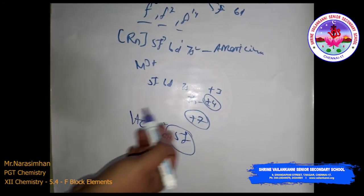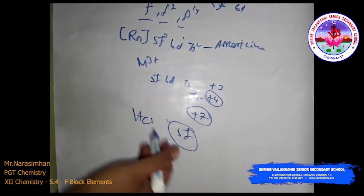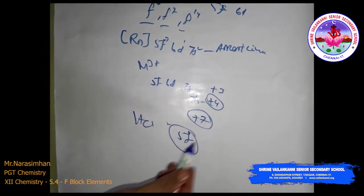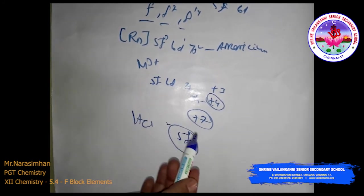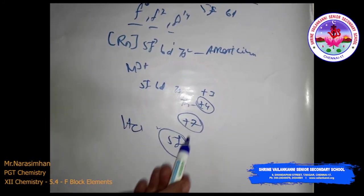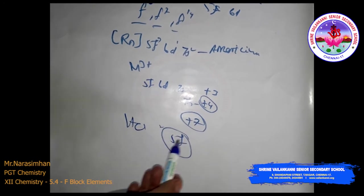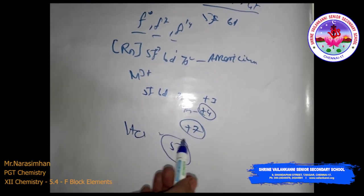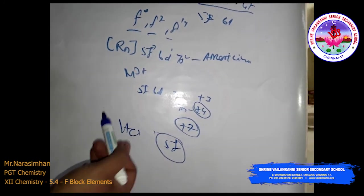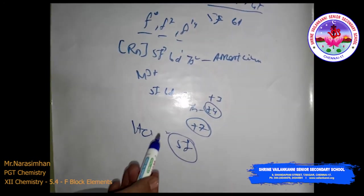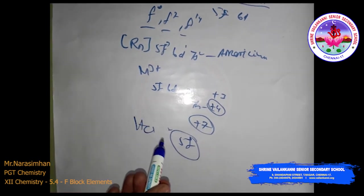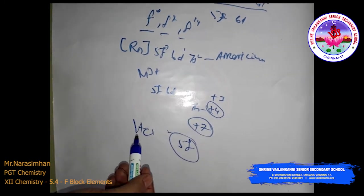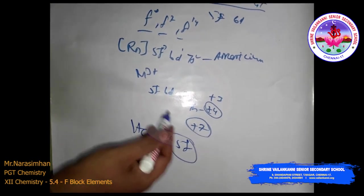In comparing actinoids and lanthanoids with respect to different characteristics: the behavior of actinoids is similar to lanthanoids in some respects, but this similarity is not evident until the second half of the actinoid series.